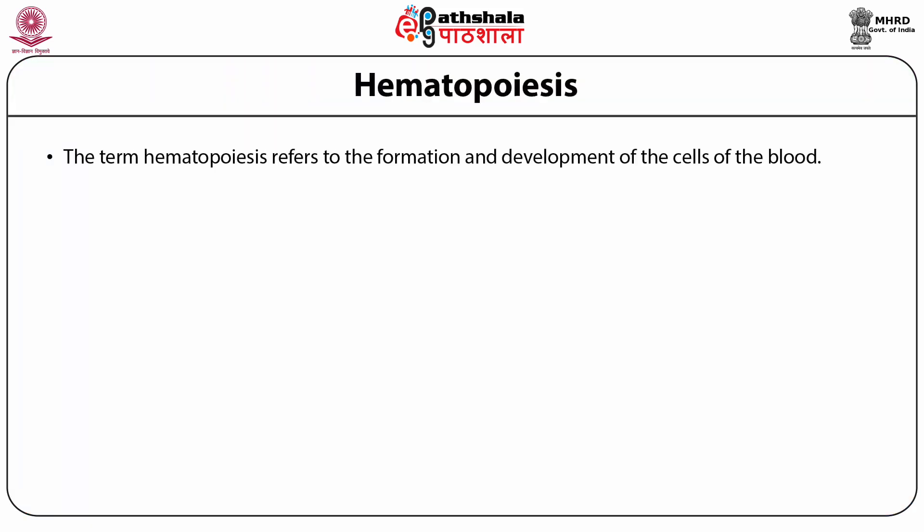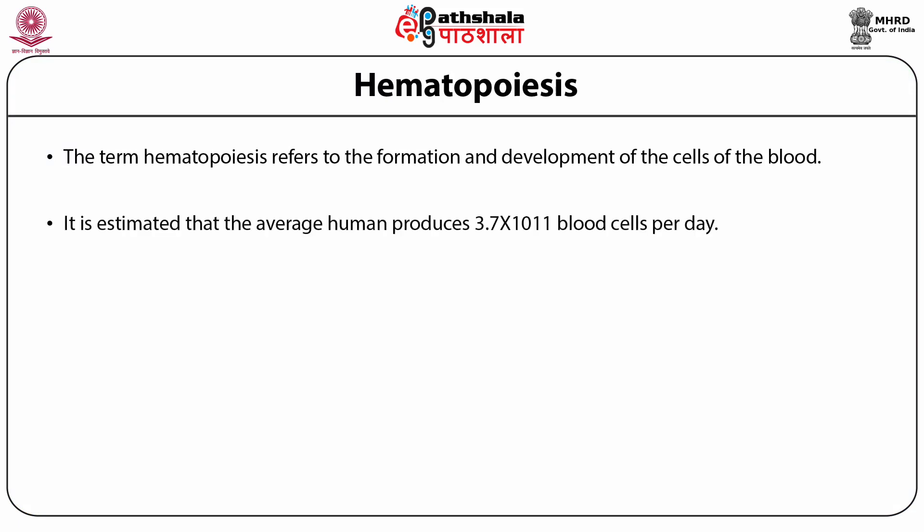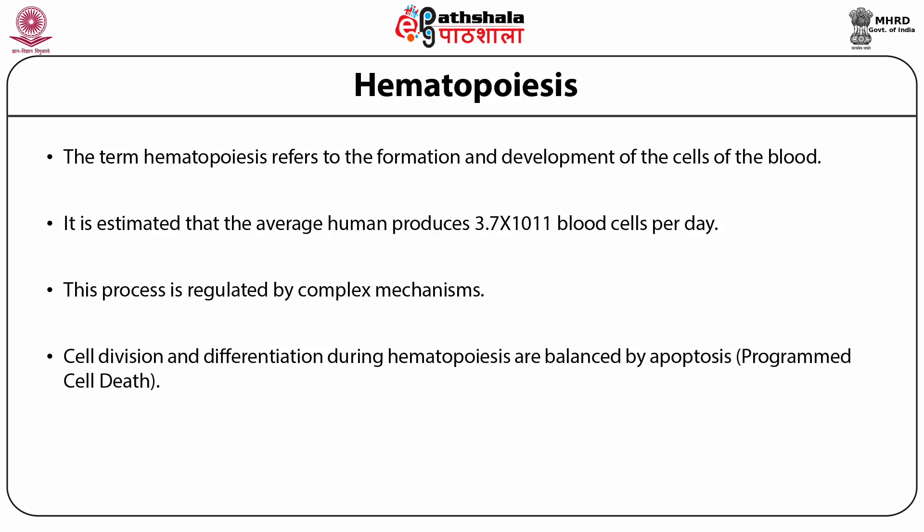The term hematopoiesis refers to the formation and development of cells of the blood. Hematopoiesis is a continuous process throughout adulthood. It is estimated that the average human produces 3.7 × 10¹¹ blood cells per day. This process is regulated by a complex mechanism. Cell division and differentiation during hematopoiesis are balanced by apoptosis.